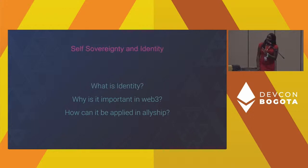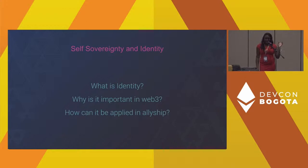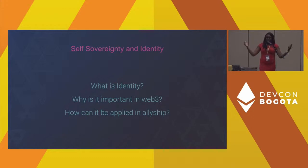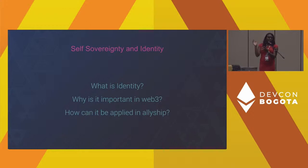D&I is also extremely important from an identity perspective in Web3. In Web3, a lot of us are known through ENS domains, Lens Protocol domains, or NFTs — you might be interacting with a person's image and pseudonymous name without really knowing who they are or what they're going through. The more you can advocate holistically for all different types of people, the better. You don't know if someone has an LGBTQ background just from an NFT and an ETH domain, so creating better policies for everyone makes us all better off.